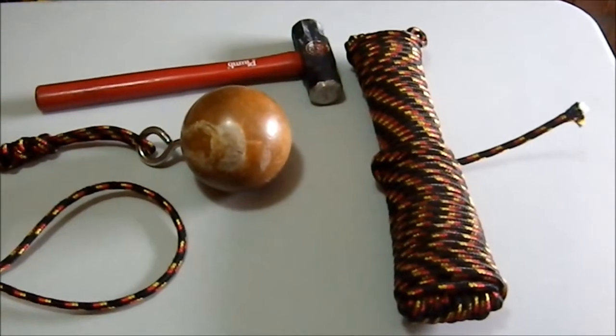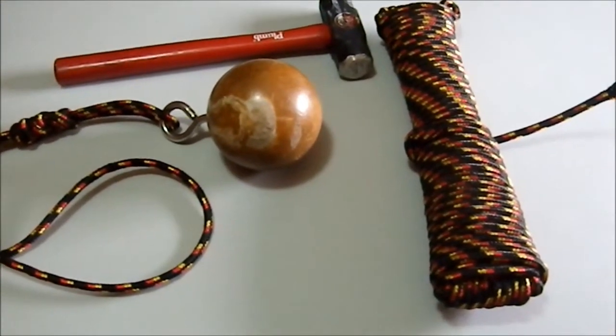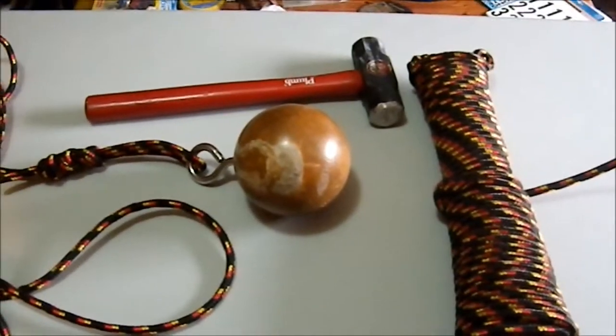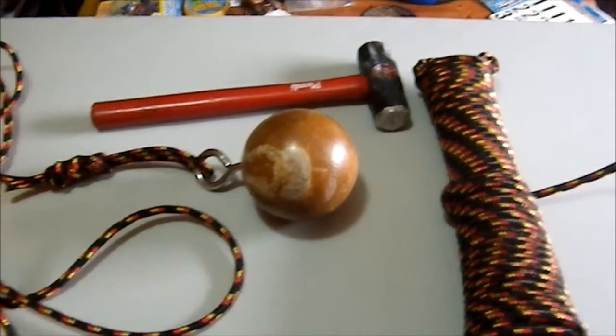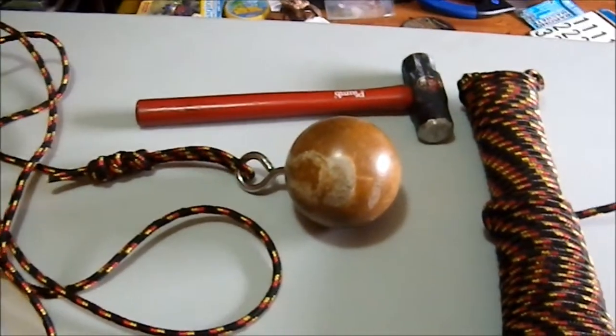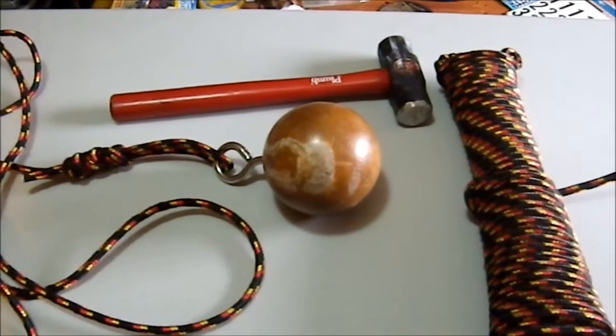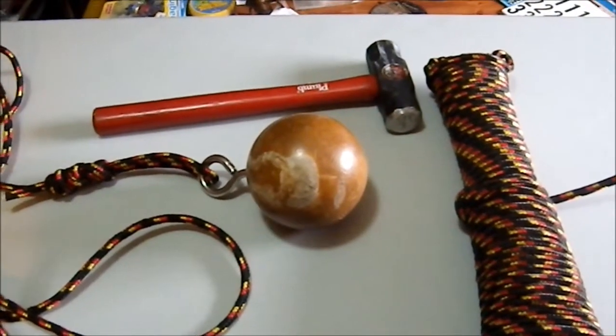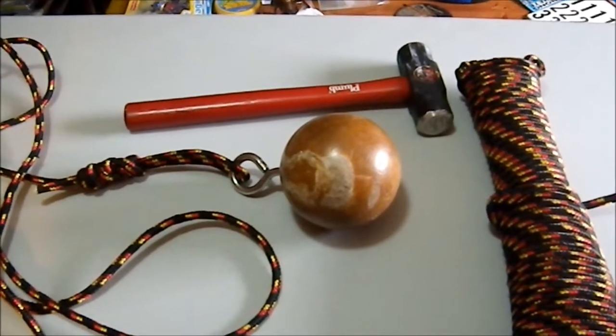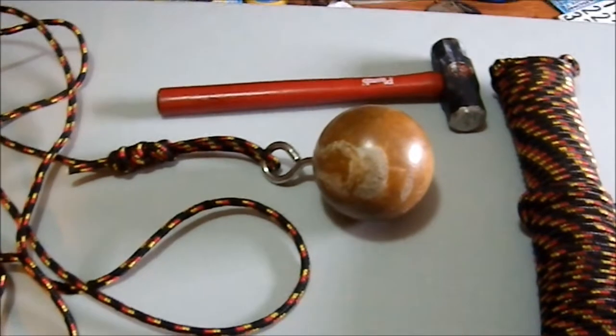Well folks, there we have one finished Meteor hammer. So I didn't use any glue. I actually put glue in the hole originally, but I had to drill it out, which was very messy. I had to take my drill bit and go wash it off in the sink. So there's no glue in this, so it's just rope, the bowling ball, and the eye bolt. That's it.